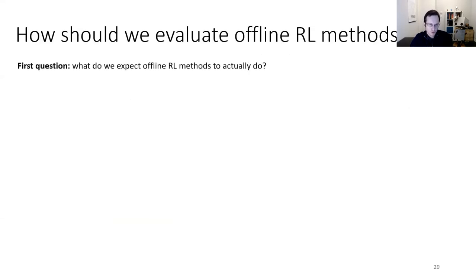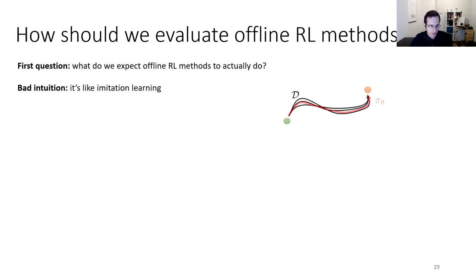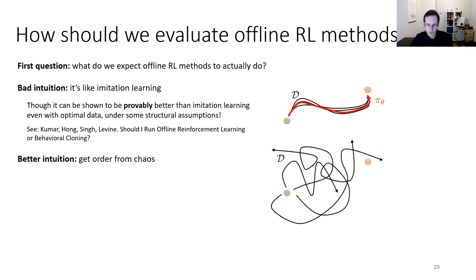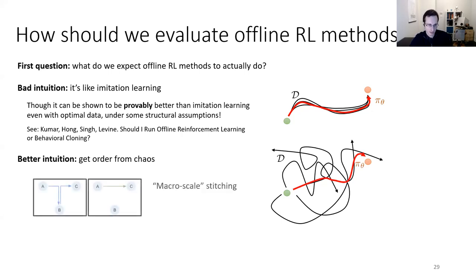Now let's discuss how to evaluate offline RL methods and what we expect them to do. The bad intuition is that it's like imitation learning — just copying good data. The better intuition is that offline RL is about getting order from chaos: finding the best behavior supported by data that goes all over the place. A simple idealized example is 'stitching': if you have data going from A to B and B to C, offline RL can figure out how to go from A to C, even without ever seeing that trajectory.